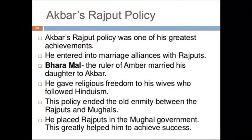Akbar also annexed territories through matrimonial alliances with Rajput princes. He won the support of Rajputs by giving them high positions in the administration. Almost all the Rajput rulers accepted Akbar as the supreme ruler, but there were many other rulers who looked upon him with suspicion. Under Akbar, this policy ended the old enmity between the Rajputs and the Mughals.